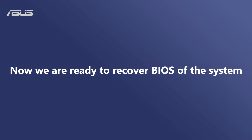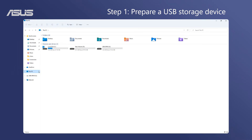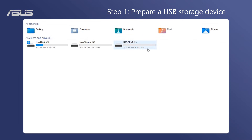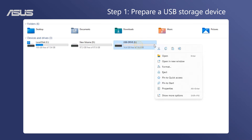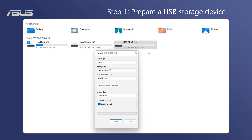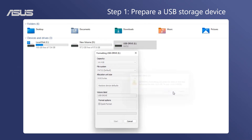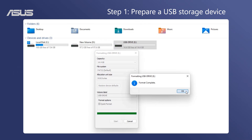Now we are ready to recover the BIOS of the system. Step 1: Prepare a USB storage device with a capacity of more than 1GB. Format your USB drive to FAT32 and MBR format.